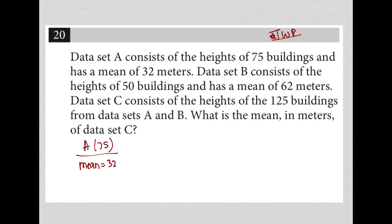The next sentence says data set B consists of the heights of 50 buildings. So B, and there are 50 buildings in this data set and the mean is 62 meters. So mean equals 62.